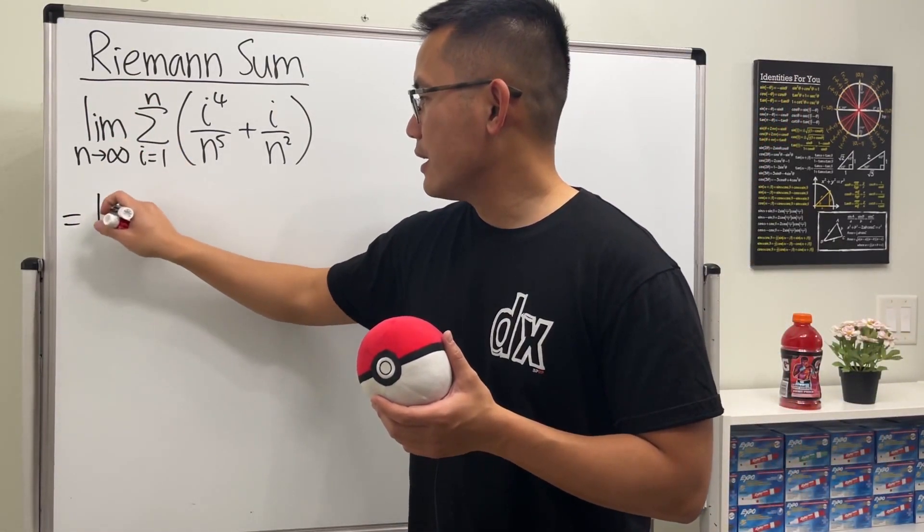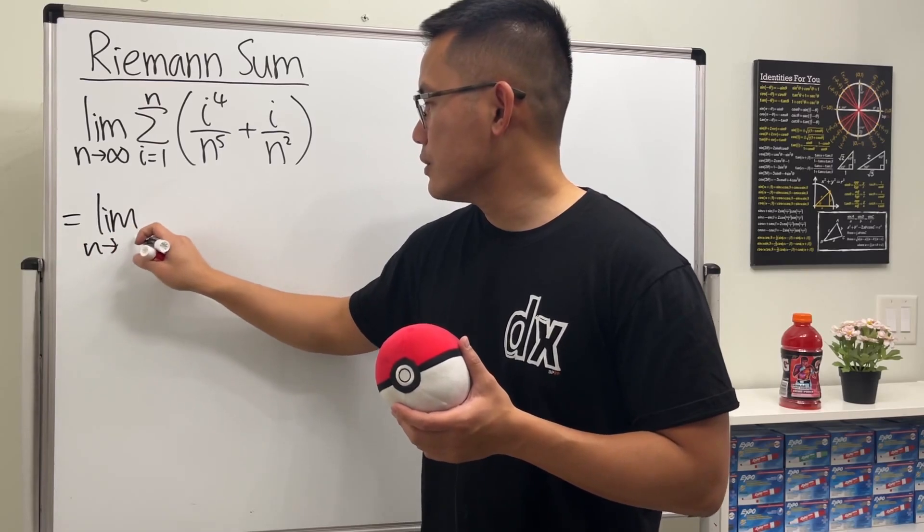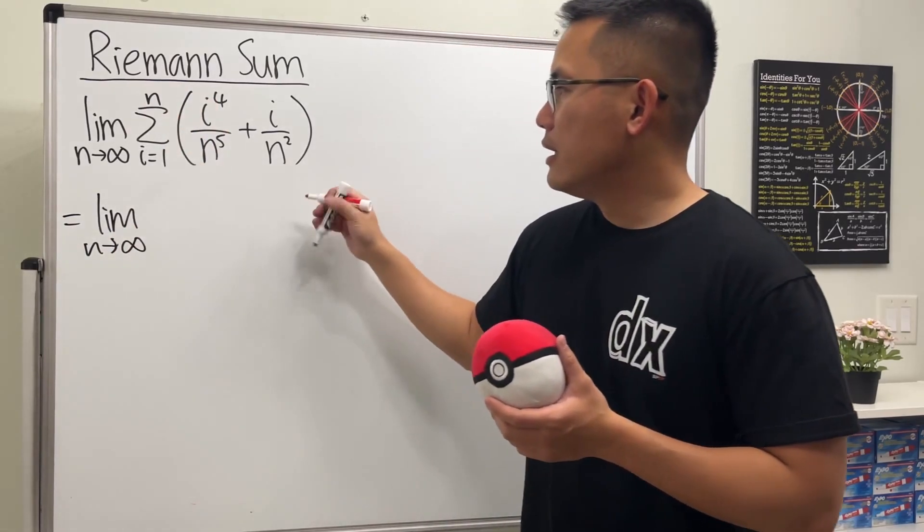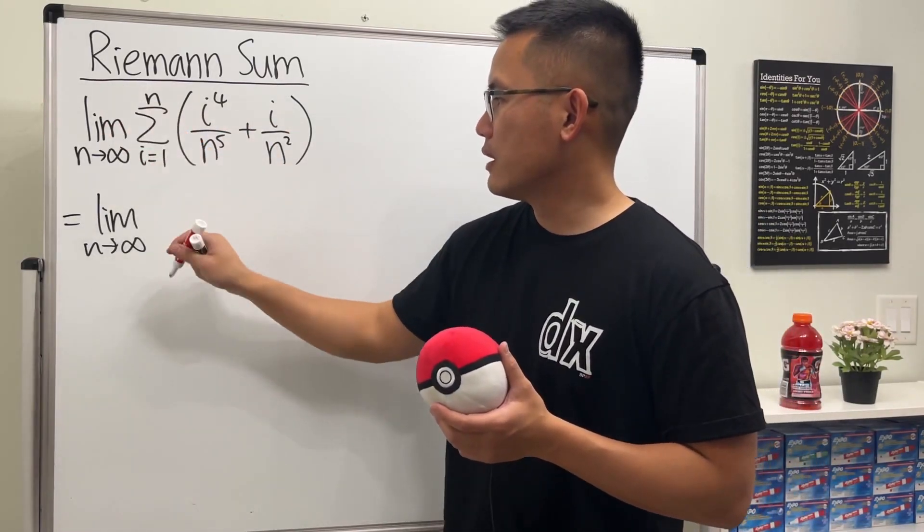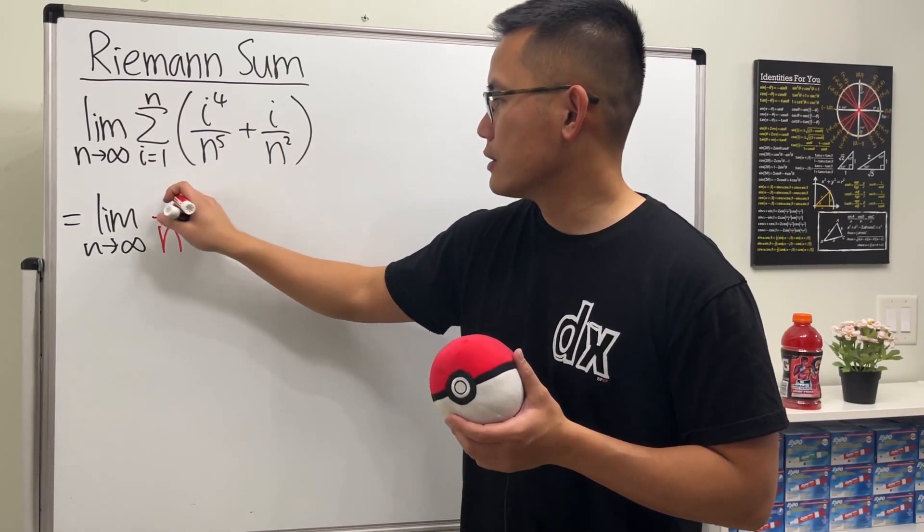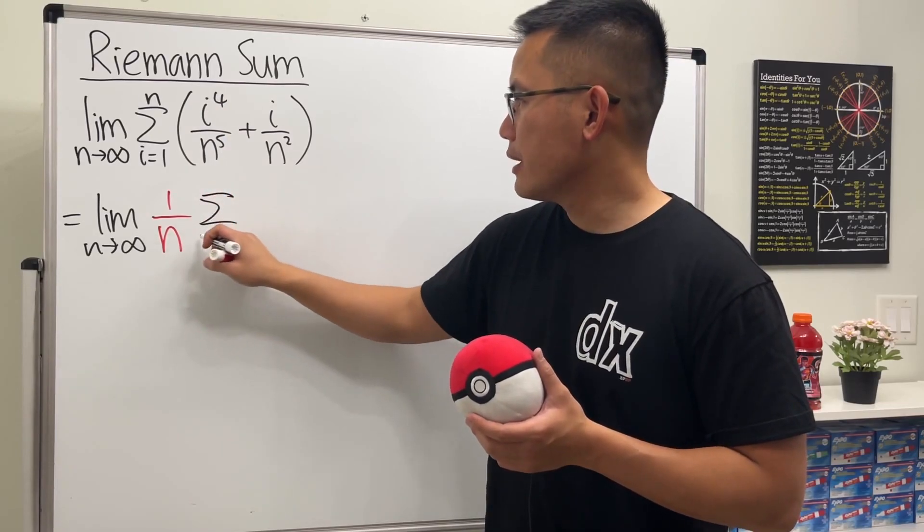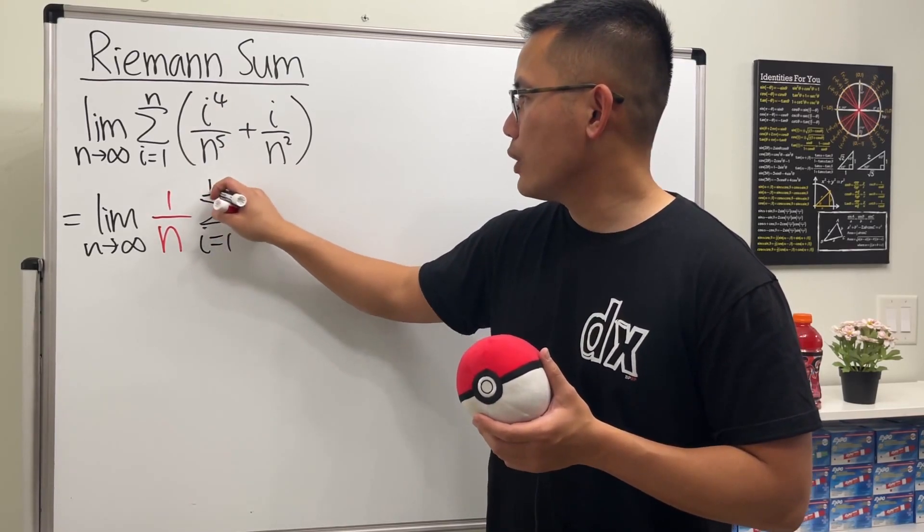Here we have the limit as n goes to infinity, and then usually let's just put the 1 over n all the way at the front of the summation. So that's what we have, and then here we will just have the sum as i goes from 1 to n.